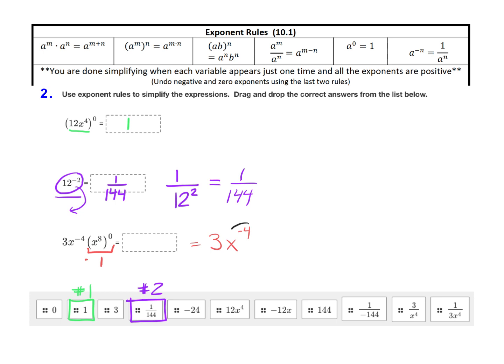The 3 is fine right where it's at. We just need to move the x to the negative fourth to the denominator. So it ends up being 3 over x to the fourth as our final answer. And that matches this one right here.